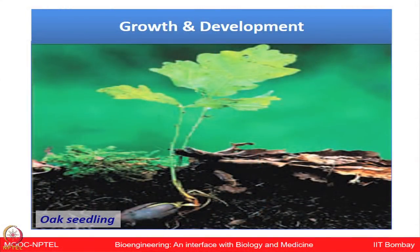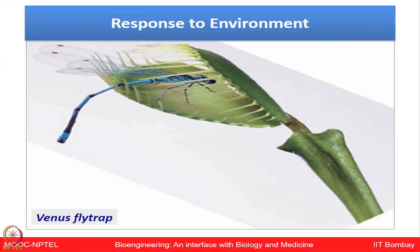The oak seedling shows the growth and development of an organism. The inherited information in the plant is passed on to the next seedlings and is required for growth and development. The Venus fly trap is an interesting example of response to environment — in response to a stimulus, the trap rapidly gets closed as soon as the damselfly lands on it, showing immediate quick action in response to environmental conditions.